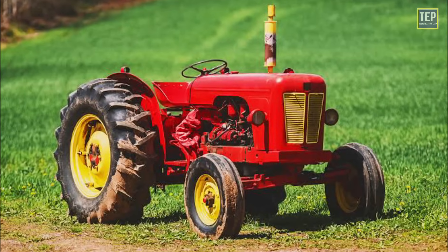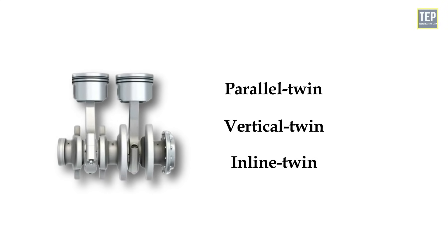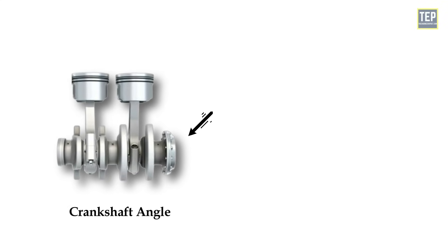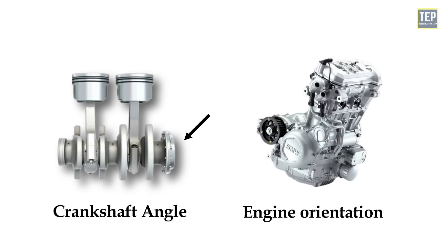The terms parallel twin, vertical twin, and inline twin originally had specific meanings relating to the crankshaft angle or engine orientation. However, they are often also used interchangeably.